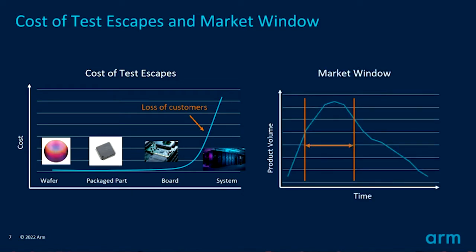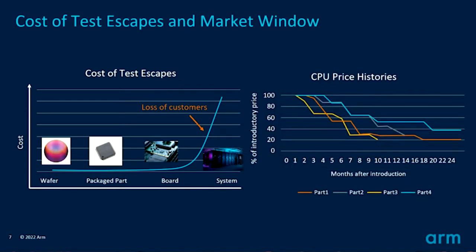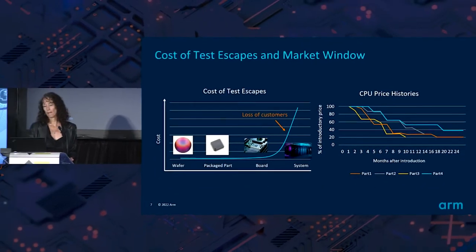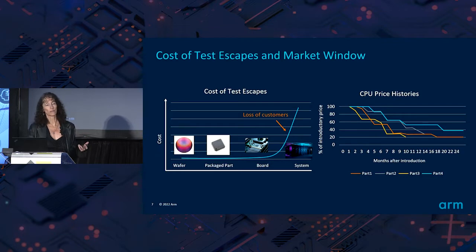Market window matters too. If a customer has a product they want to put out at Christmas, you have to have your part ready. If you have the silicon ready but not the test, you cannot ship bad parts — that causes delays and makes them miss their market window. You need a high-quality test, and you need it quickly. Also, if you're the first out with a product like a CPU, you get the most money. Over time the price goes down fairly quickly because of competition. This shows why testing is so important.